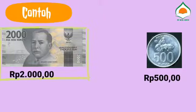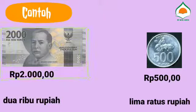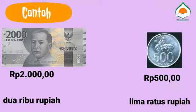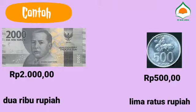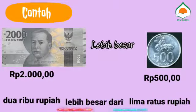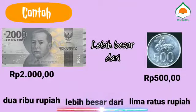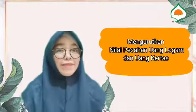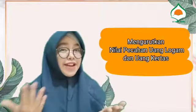Contoh selanjutnya, di sini terdapat 1 lembar uang kertas dengan nilai 2.000 rupiah dan 1 keping uang logam dengan nilai 500 rupiah. Uang kertas dengan nilai 2.000 rupiah lebih besar dari uang logam dengan nilai 500 rupiah. Sekarang kita akan belajar tentang mengurutkan nilai pecahan uang logam dan uang kertas.